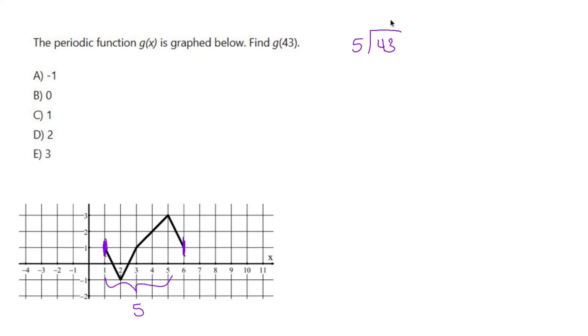So 5 divided by 43 is 8. 8 times 5 is 40. Subtract. We have a remainder of 3.